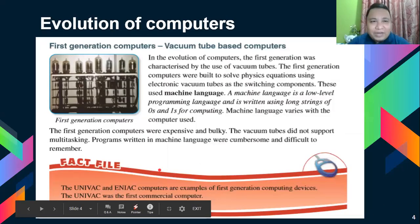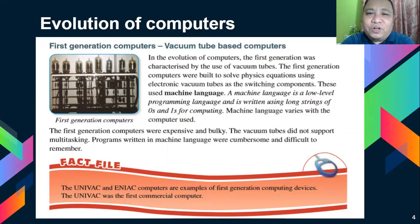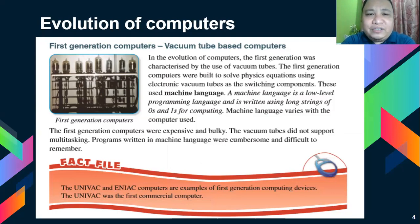We also have first generation computers: vacuum tube-based computers. The first generation was characterized by the use of vacuum tubes. These computers were built to solve equations using electronic vacuum tubes as switching components. They used machine language — a low level programming language written as long strings of zeros and ones. Computers can only understand zeros and ones at the machine language level.